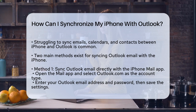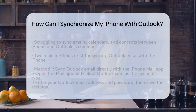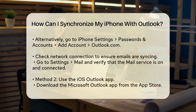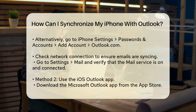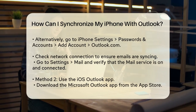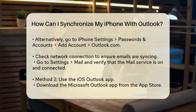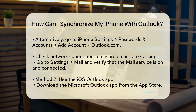Alternatively, you can go to your iPhone Settings, select Passwords and Accounts, then Add Account, and choose Outlook.com to add your account. To ensure your emails are syncing, check your network connection. Go to Settings, then Mail, and make sure the mail service is turned on and connected to your network by selecting WiFi and Cellular Data.